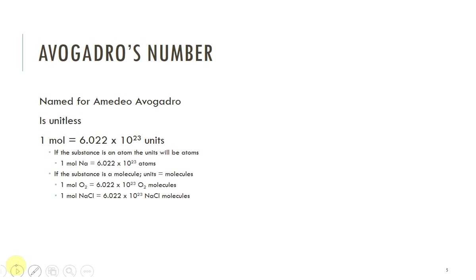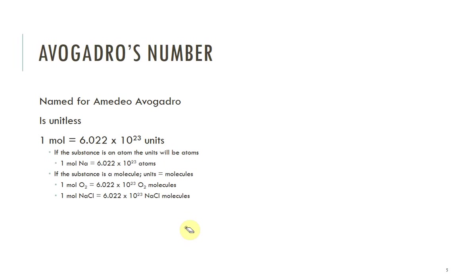A lot of the time, people hear this number and they get kind of upset — what on earth does that mean? It's the same as a dozen. If I said a dozen cars, it means 12. If I say a dozen eggs, it means 12 eggs. A dozen is just a number — it's unitless. Avogadro's number is the same concept: it is just a unitless quantity. If we're talking about atoms, it would be atoms; if we're talking about molecules, it's molecules. Whatever we're talking about, it's going to have that unit.